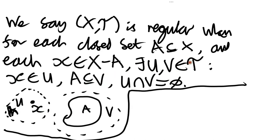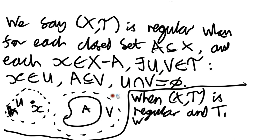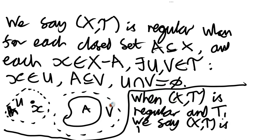This gives us our next separation axiom: when our topological space is regular and also T1 — so every singleton set is closed — in that case we say that it's T3. There is some variation between authors about the definitions of regularity and T3.